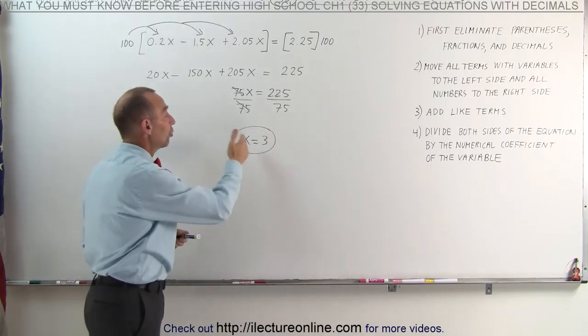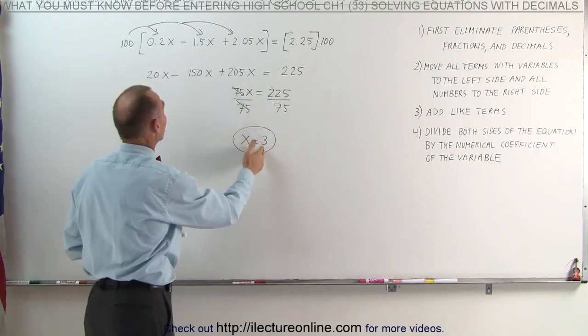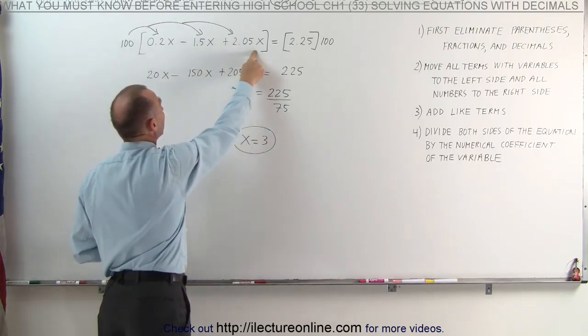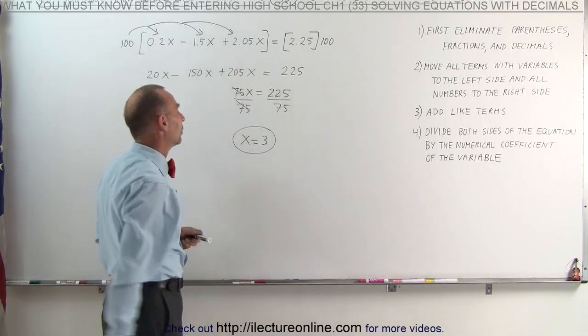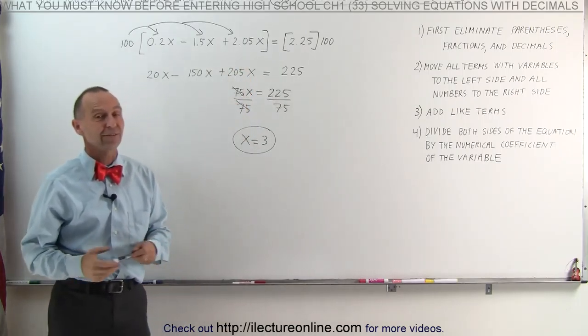And again, 3 is the solution, which means if we plug the number 3 into every one of the x's on the original equation, the left side will equal the right side. And that's how it's done.